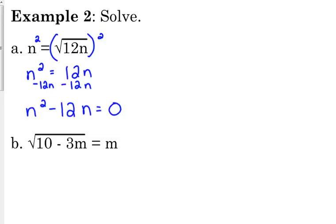Then what do we always do? We factor, right? This is not a trinomial, so our factoring here is going to be a GCF. They both have an n. Pull out an n, so we get n times n minus 12 is equal to 0. So we're potentially going to have two solutions here.